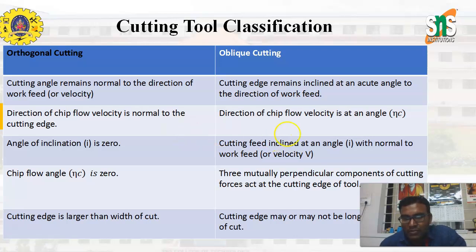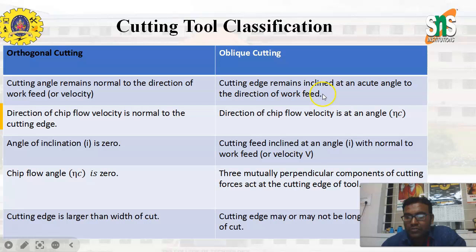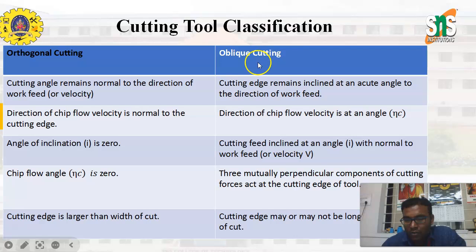Next we will discuss some differences between oblique and orthogonal cutting in detail. In orthogonal cutting, the cutting angle remains normal to the direction of work feed or velocity, whereas in oblique cutting, the cutting edge remains inclined at an acute angle to the direction of work feed. In orthogonal cutting, the direction of chip flow velocity is normal to the cutting edge, whereas in oblique cutting, the direction of chip flow velocity is at an angle. The angle of inclination is 0 for orthogonal cutting, whereas in oblique cutting the cutting edge is inclined at an angle with the normal to the work feed.